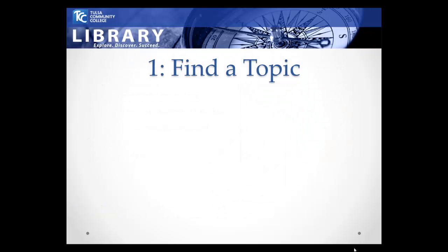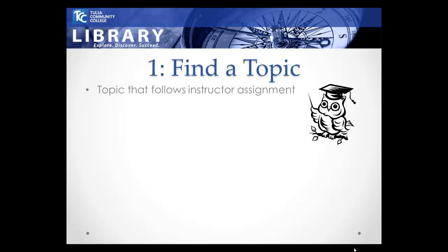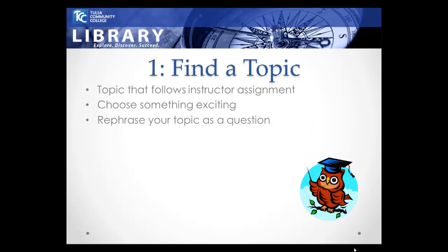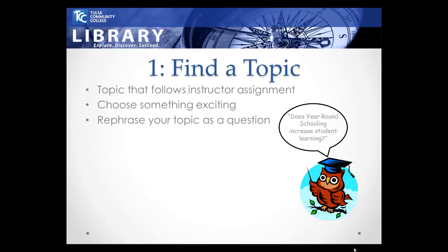Step 1: Find a Topic. What is your information need? Begin by selecting a topic within the parameters of the assignment set forth by your instructor, who will likely provide specific guidelines that must be followed. Be sure to choose a topic that you find exciting — you will find the process much more enjoyable if you are researching something you like. A great way to begin is to state your topic in the form of a question, which will help you be clear and specific. For example, you might ask: does year-round schooling increase student learning?